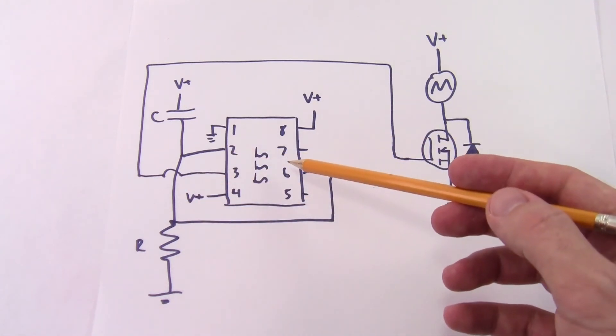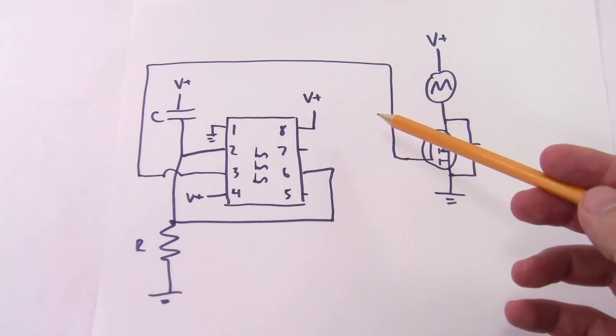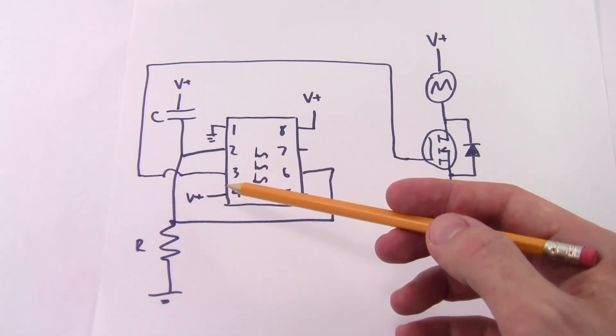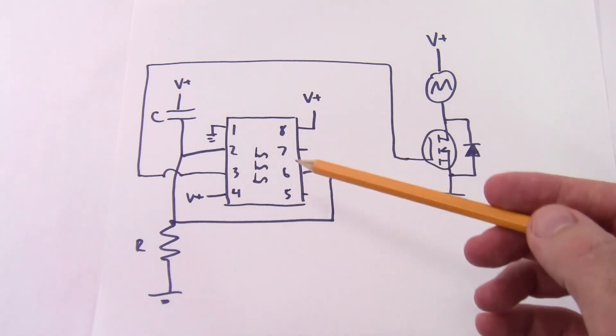Pin 2 is also tied over to pin 6. Pin 3 is your output and that's going to go over to the motor we'll talk about that in a minute. Pin 4 goes to V plus, pin 8 goes to V plus, pins 5 and 7 are unused.